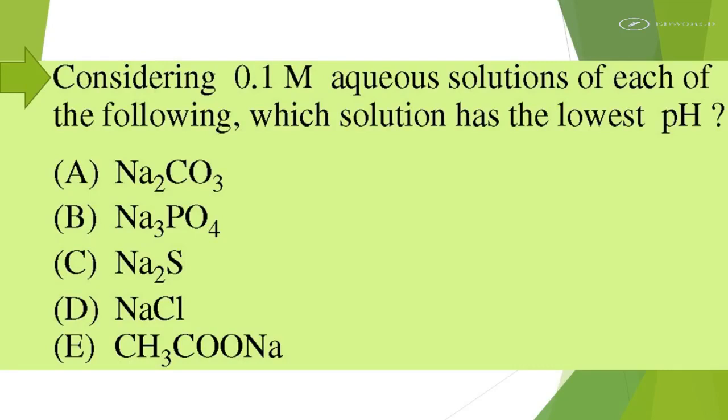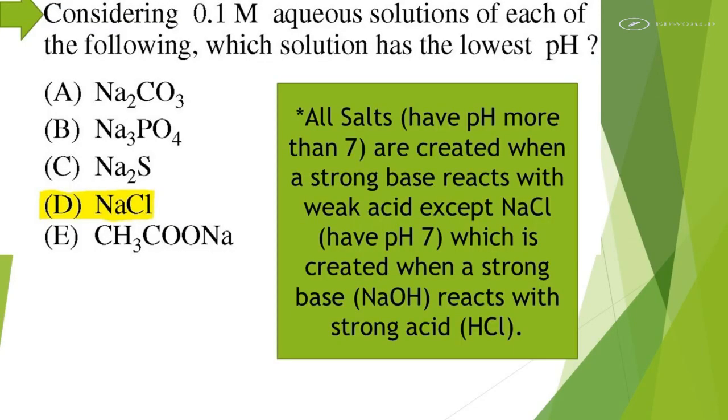Considering 0.1 M aqueous solutions of each of the following, which solution has the lowest pH? All salts have pH more than 7, are created when a strong base reacts with weak acid except NaCl, which has pH 7, created when strong base NaOH reacts with strong acid HCl.